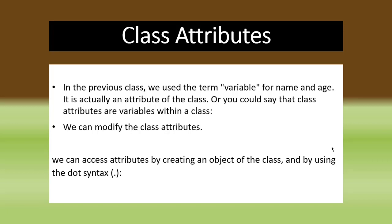In the last class we talked about class and objects. We used variables like age or name — those are actually class attributes. When we use variables within a class, that is called class attributes. We can also modify class attributes, and we can access attributes by creating an object of the class and by using the dot syntax.